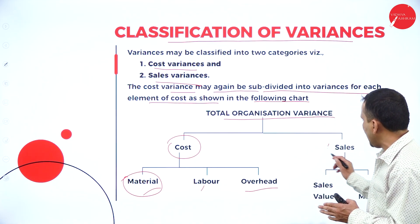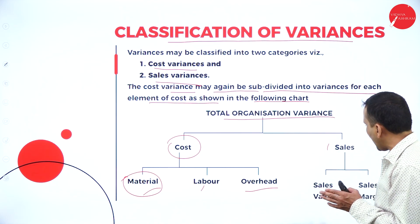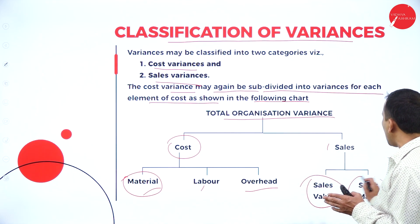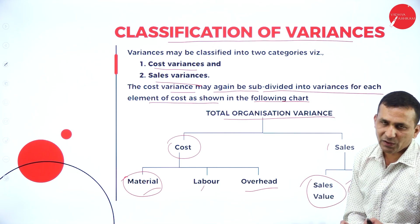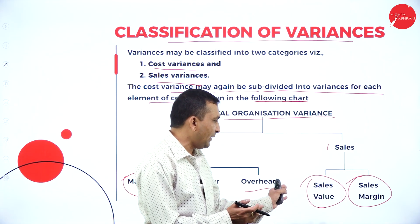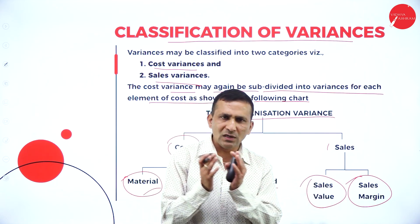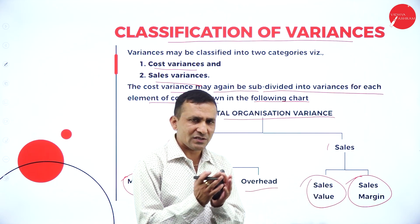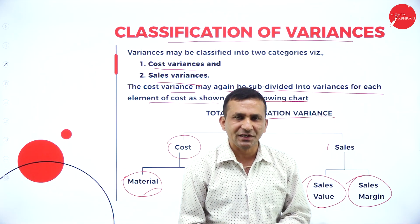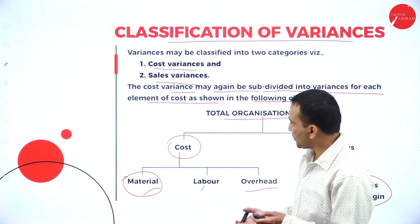Moving to sales, there are two sub-categories: one is sales value basis and sales margin basis. Under sales, we need to identify the value — how you are setting the standard — and based on the sales margin, which is nothing but your profit generation.